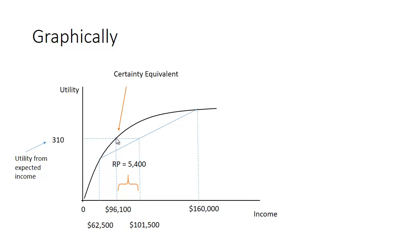Sometimes we call this the certainty equivalent. So she'd be willing to accept $5,400 less, or $96,100 rather than $101,500 which is the expected value, to get paid with certainty.